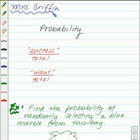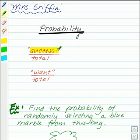Hi, it's Mrs. Griffin, and in this lesson we're going to talk about probability. Let's start with simple probability, when we just have one event. Basically, probability is defined as your success over the total, or what you want over the total.